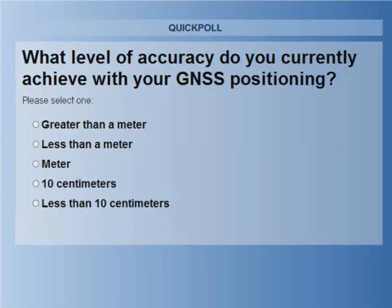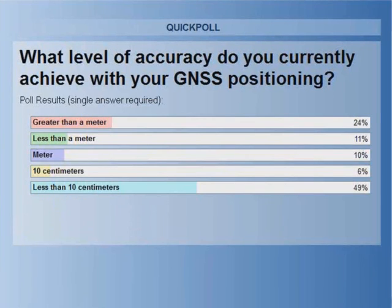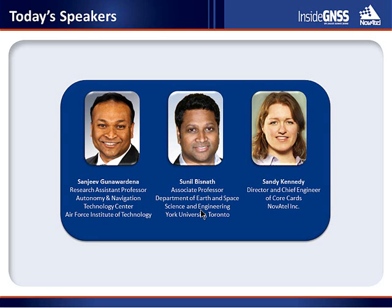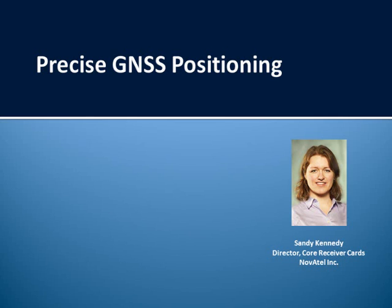The first interactive poll asks what level of accuracy attendees currently achieve with their GNSS positioning. Results show 24% achieving greater than a meter, 11% less than a meter, 10% at a meter, 6% at 10 centimeters, and a majority of 49% achieving less than 10 centimeters. The moderator introduces today's esteemed panel: Sanjeev Gunawardena, Sunil Bisnath, and Sandy Kennedy.